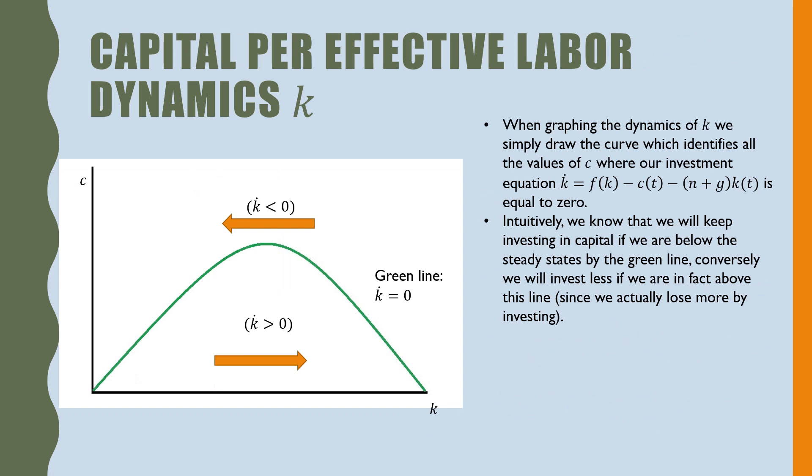When graphing the dynamics of k, we simply draw a curve which identifies all the values of c where our investment equation k dot is equal to zero. Intuitively, we know that we will keep investing in capital if we are below the steady state by the green line. Conversely, we will invest less if we are in fact above this line, since we are losing more by investing.